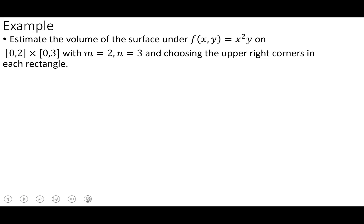So estimate the volume of the surface f(x,y) = x²y² on the rectangle [0,2] × [0,3] with m = 2, n = 3, and choosing the upper right corners in each rectangle.